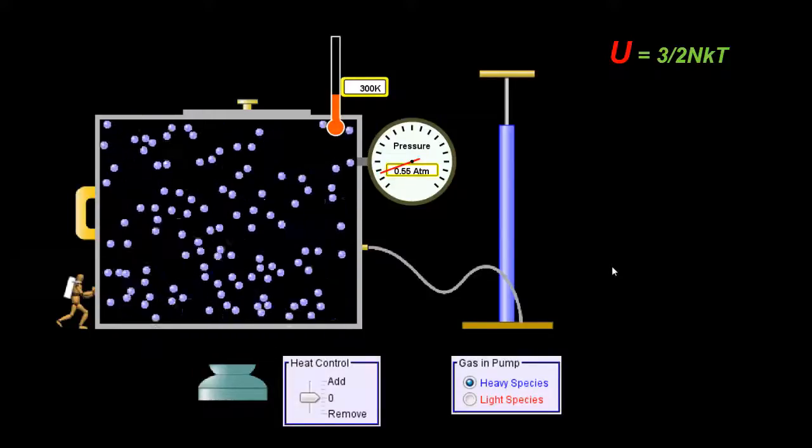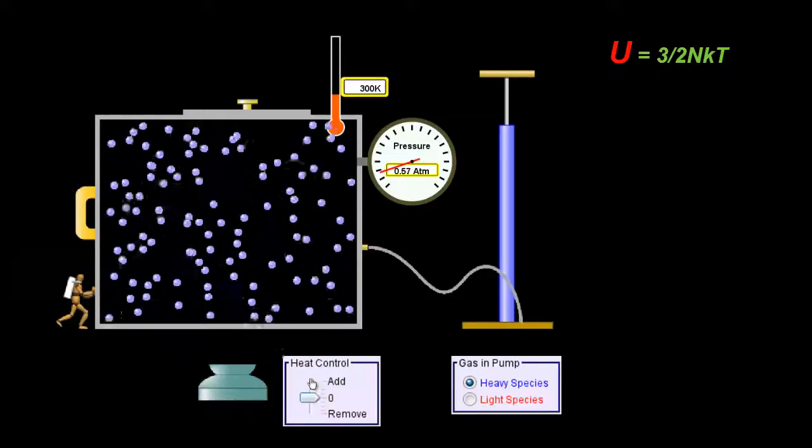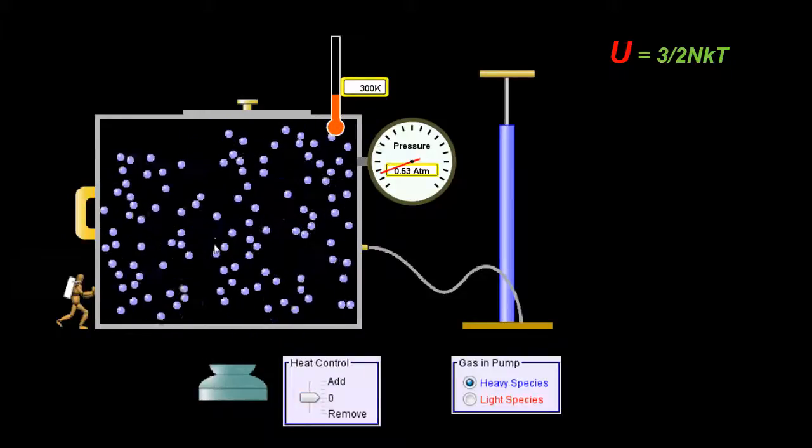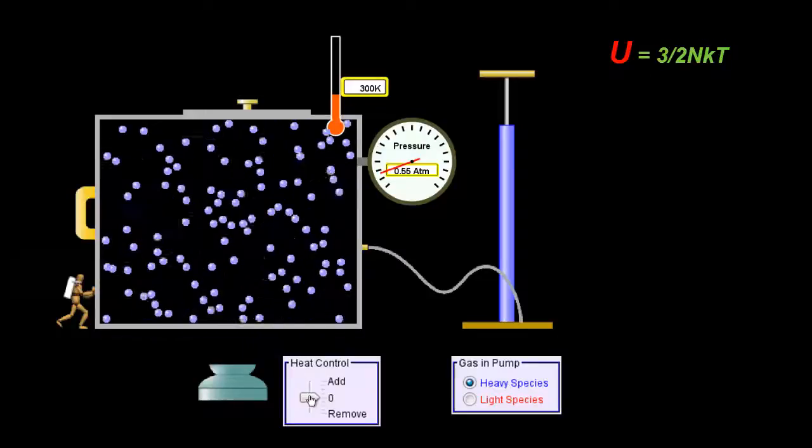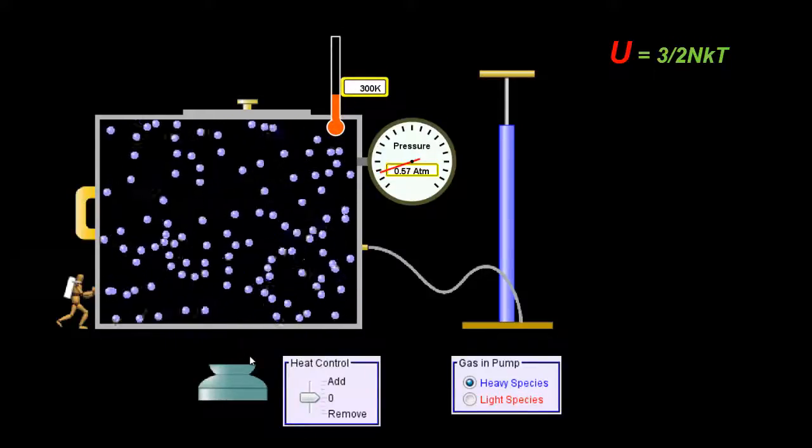Now in this sim we're able to add and remove heat. So when I slide this little slider up to the add feature, basically it's like it turns on a Bunsen burner and heat is going to pour into our chamber. When I remove heat, you'll see little ice cubes and that's going to lower the temperature of the chamber.